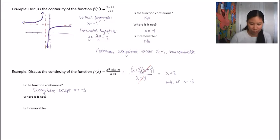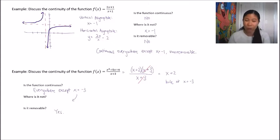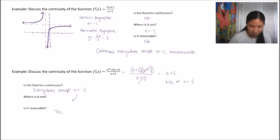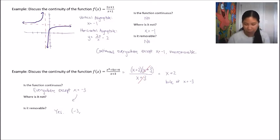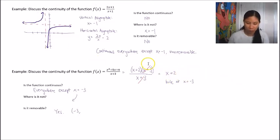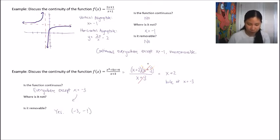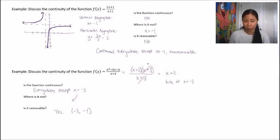That answers the first and second questions. Is it removable? Yes, because it's a hole. Holes are removable — we could just plug in a point at x equals negative three. Specifically, plugging negative three into the simplified function x + 2 gives a y value of negative one. So if we defined a point at (−3, −1), we would have a continuous function.